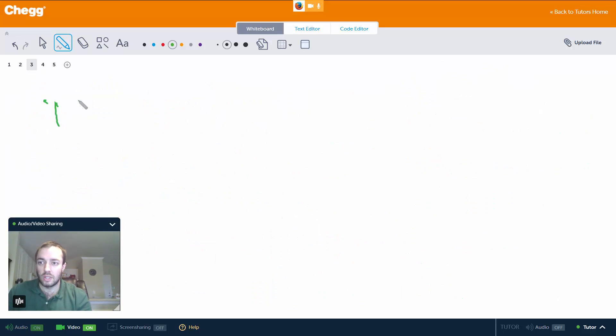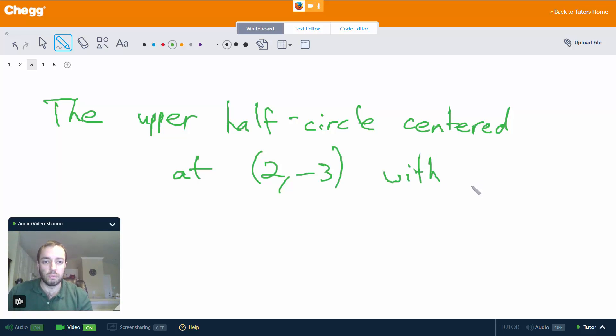So then the answer is to describe the graph without drawing a picture. So the graph is the upper half-circle, or semi-circle if you prefer, centered at (2, -3) with radius 7. So notice the center and the radius don't change — all that's really affected is how much of the circle do we actually get.